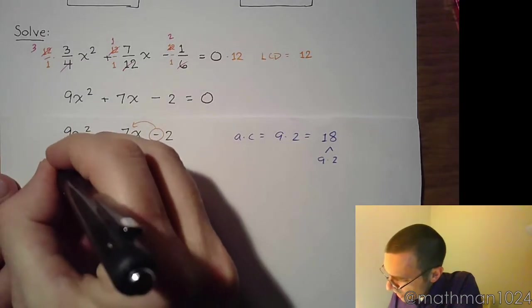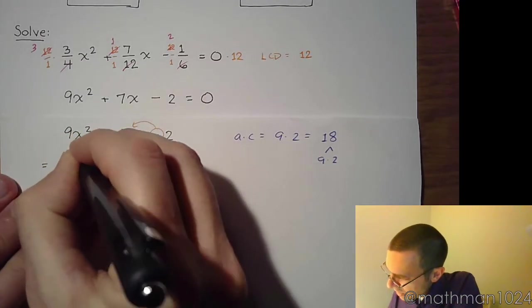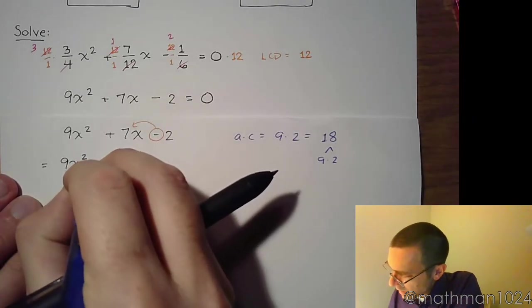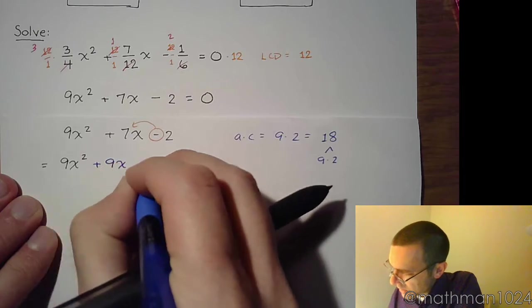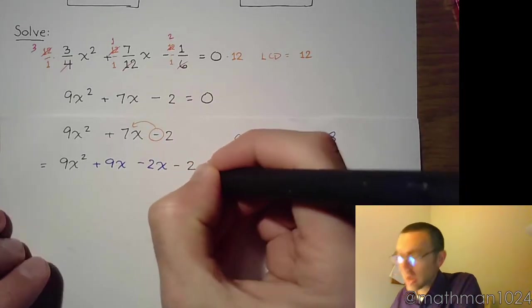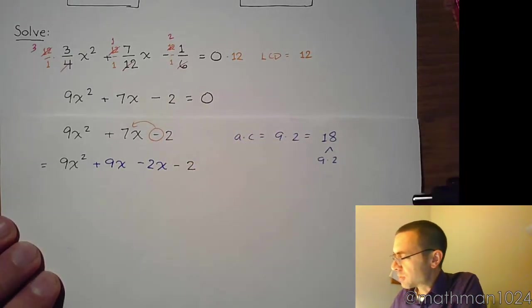So now we're going to take that, and we're going to rewrite that middle term, that plus 7x, using 9 and 2. And so we can say plus 9x and minus 2x. So now we have four terms so that we can factor by grouping.